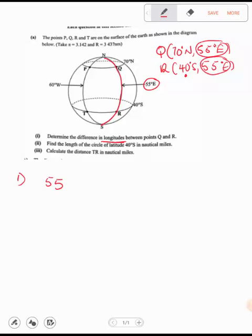Now remember, they are on the same longitude. So when they are the same, what do we do? We will subtract. 55 degrees east minus 55 degrees east. The answer will give us 0 degrees. That's the difference.